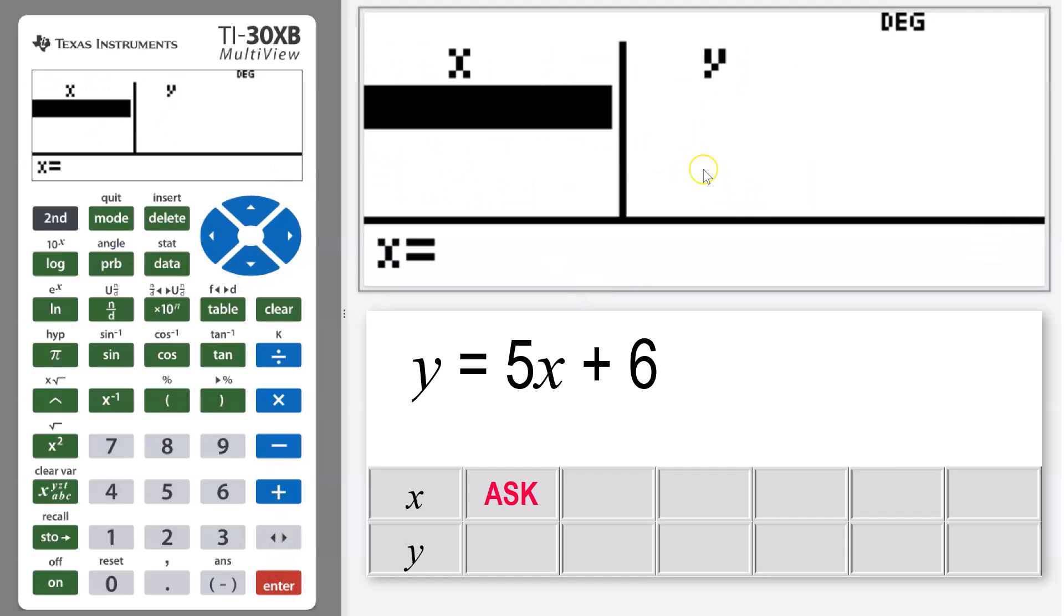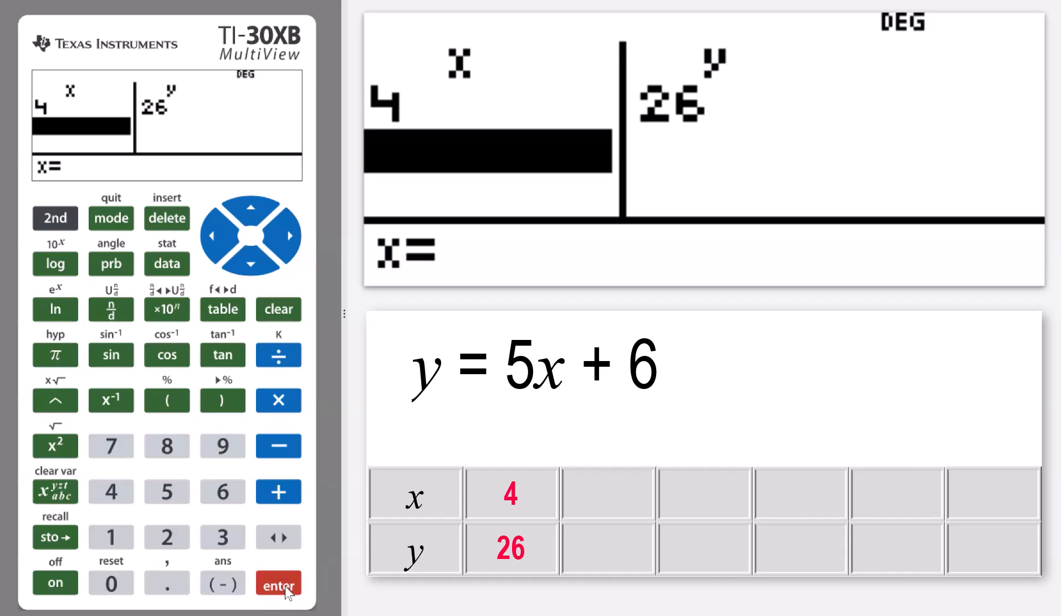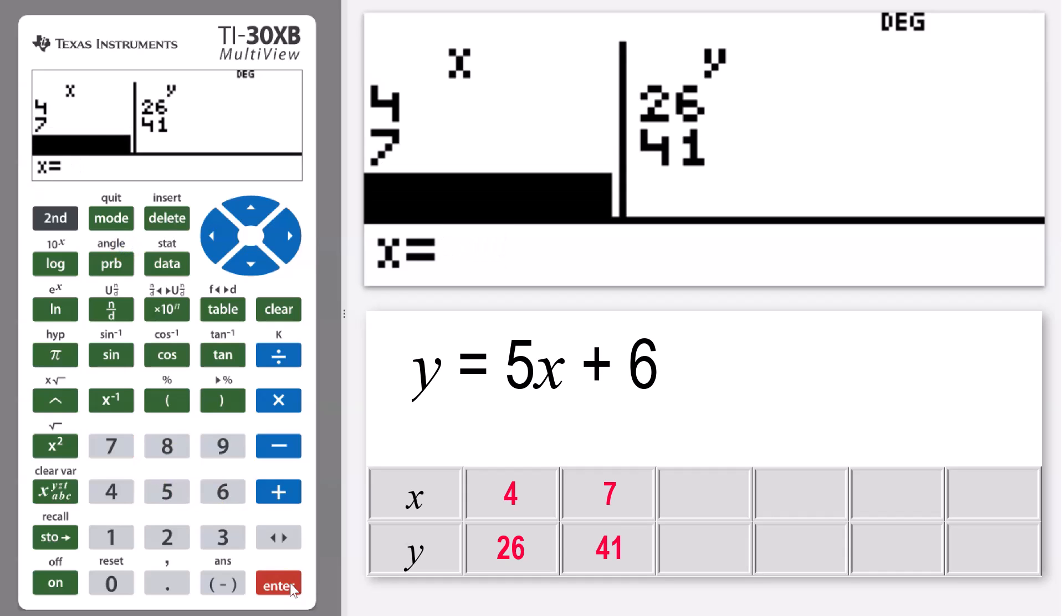So again, I'm going to turn that on to ask x and press ok. Now this is going to look a little bit funny because it comes up and it seems like there's nothing in the table, but what actually we can do is here it says x equals, so I can start off with that first value and type in 4, because the first one I wanted to find was what's y when x is equal to 4. So I can type in 4, press enter, we see y is equal to 26. The next one was 7, so I can type in x equals 7, and then it comes up with 41. And then the last one was 20, so I can type in 20, press enter, and there I get 106.